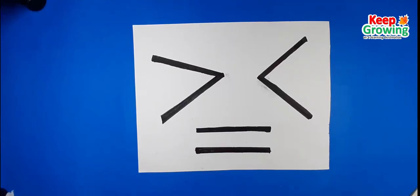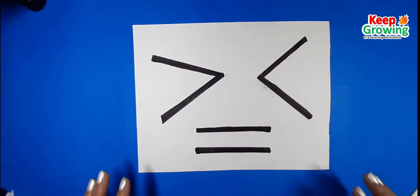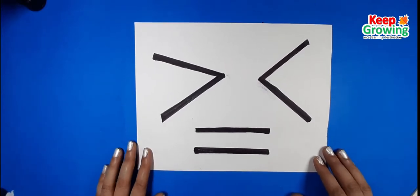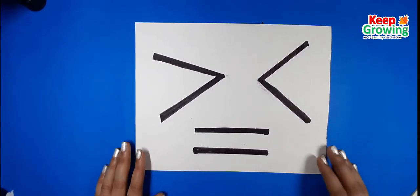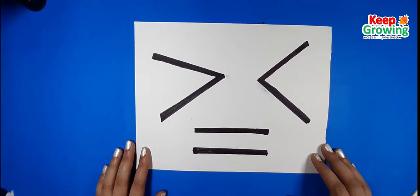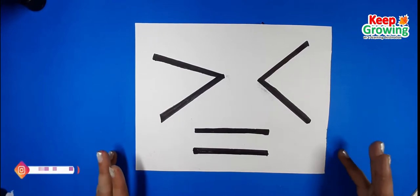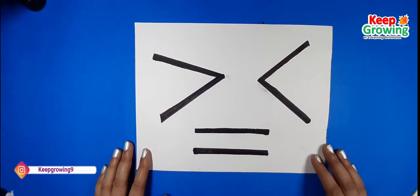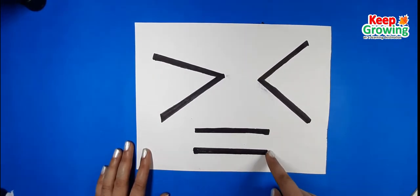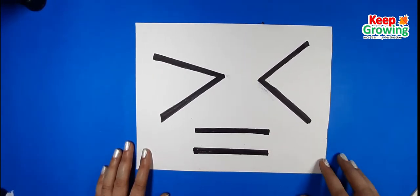Hello everyone. Today we are going to learn how we can teach the concept of less than and greater than to our young learners. We use a sign of less than and greater than when we compare two numbers. Sometimes we use a sign of equals to when both the numbers are equal.